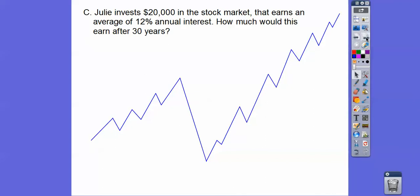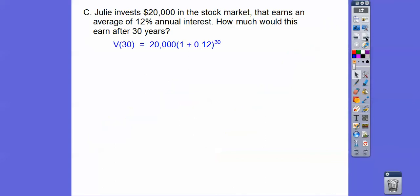If we go ahead and do this, we're going to do 30 years for $20,000 for Julie. So it's 12%, 1 plus 0.12. And then let's go ahead and add those together. So 1 plus 0.12 is 1.12.